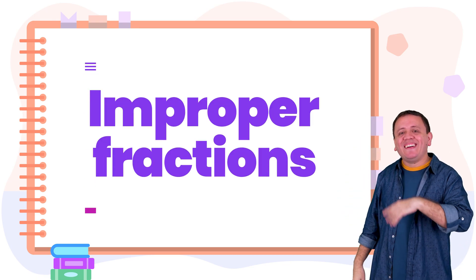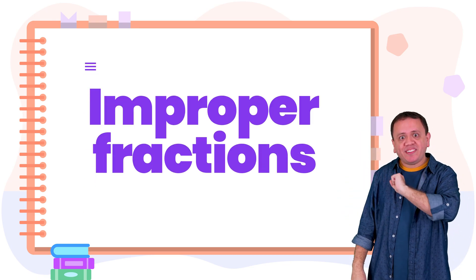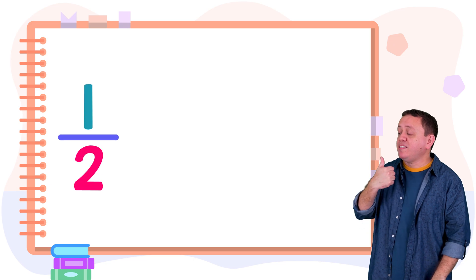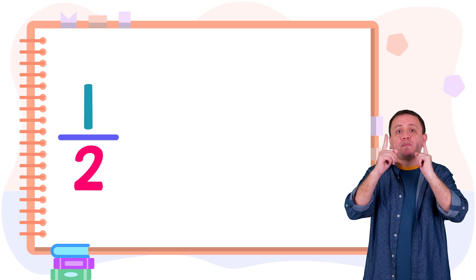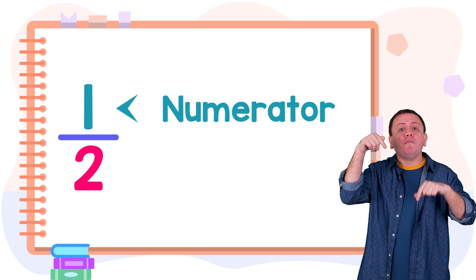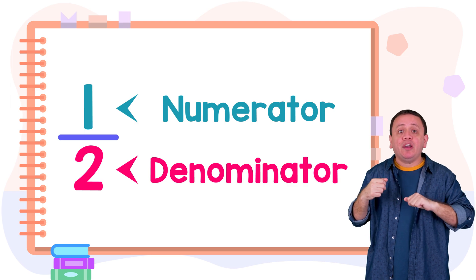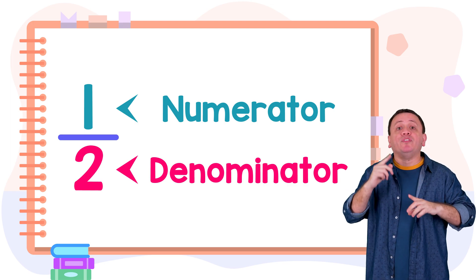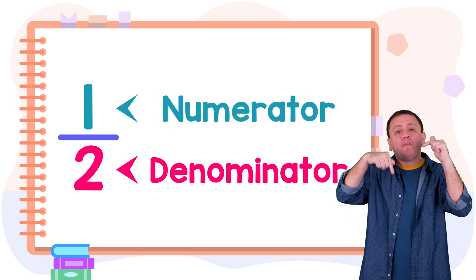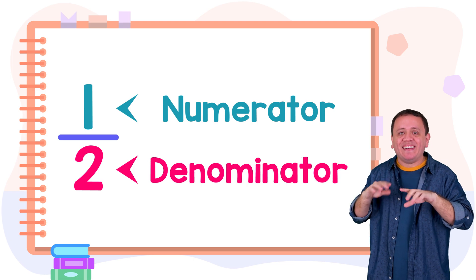Hi! Today we will take a look at improper fractions, but first we need to remember that in a fraction, the top number is the numerator and the bottom number is the denominator.